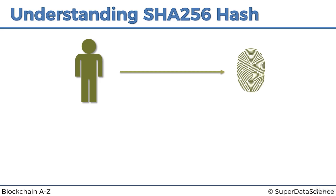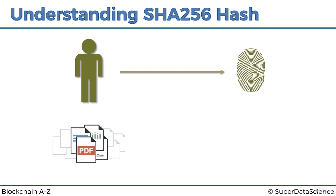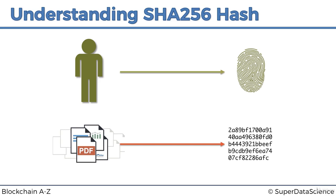What if we could take the same principle and apply it to digital documents? What if we could come up with a fingerprint that would identify documents for us? Such a fingerprint exists — it's called the SHA-256 hash. The algorithm behind SHA-256 was developed by the NSA.